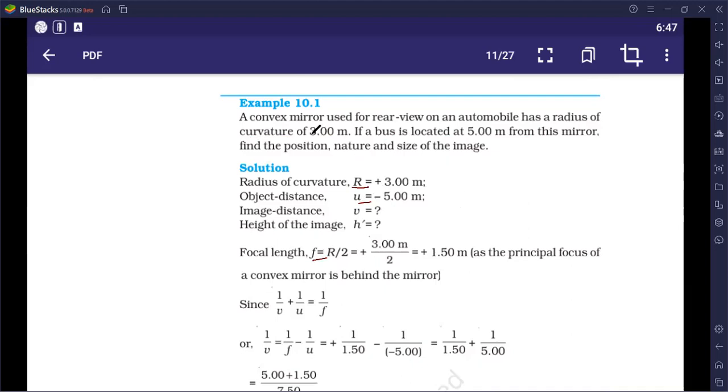What information has been given? Bus is located at 5 meters from the mirror. Object has been here. The distance from the mirror is 5. So, U is always negative. Always negative. No matter. U is always negative. So, what is the object distance? Minus 5. If you don't forget this minus, your numerical will be wrong. There are two things that we have given. R is given. We have defined F. U is given. What are we supposed to find out? Find the position of the image. Position of the image means where the image is made. So, what do you have to find? We have to find V.